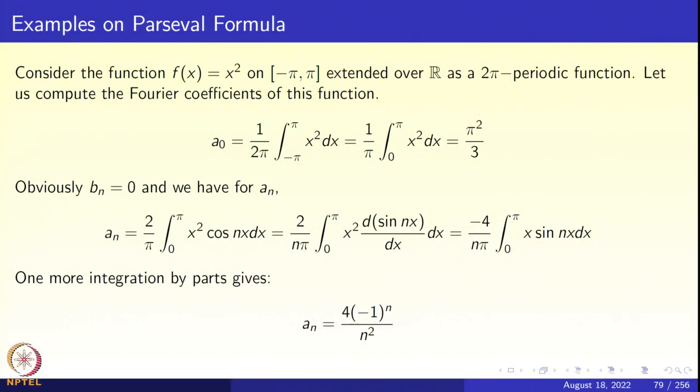We now turn to a couple of examples illustrating the Parseval formula. The first example starts with f(x) = x² on (−π, π), which is an even function. We do a 2π-periodic extension, which is Lipschitz continuous, so the pointwise convergence theorem applies and the Fourier series converges to f. Computing the Fourier coefficients: a0 = π²/3, the bn's are 0 since the function is even, and an = 4·(−1)^n / n², computed via integration by parts.